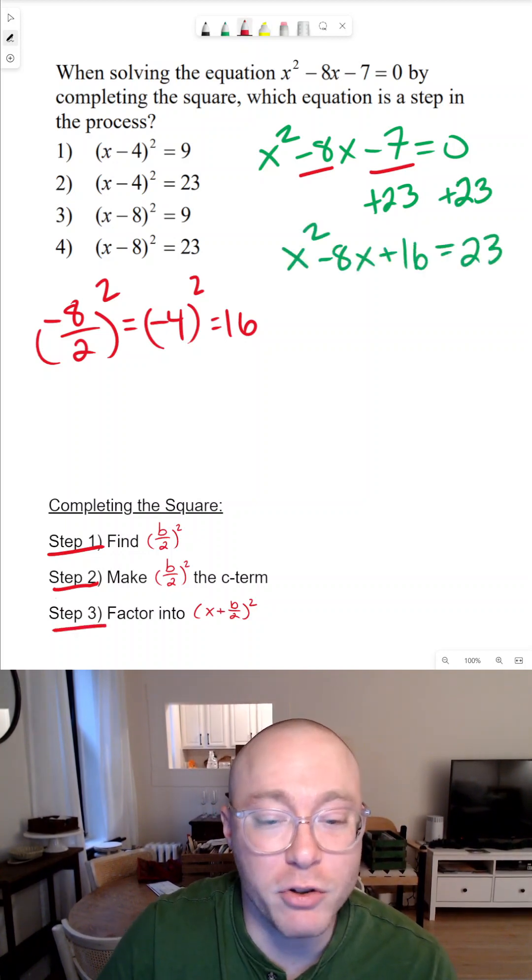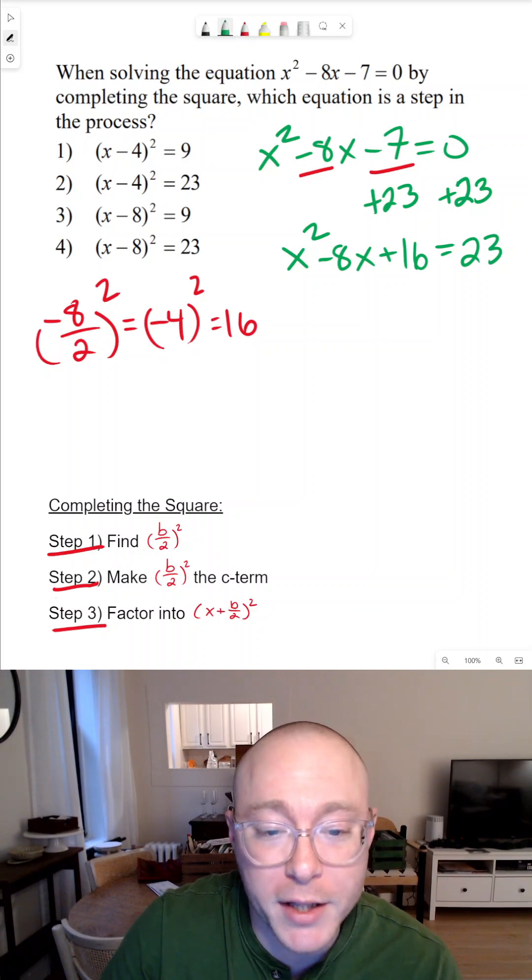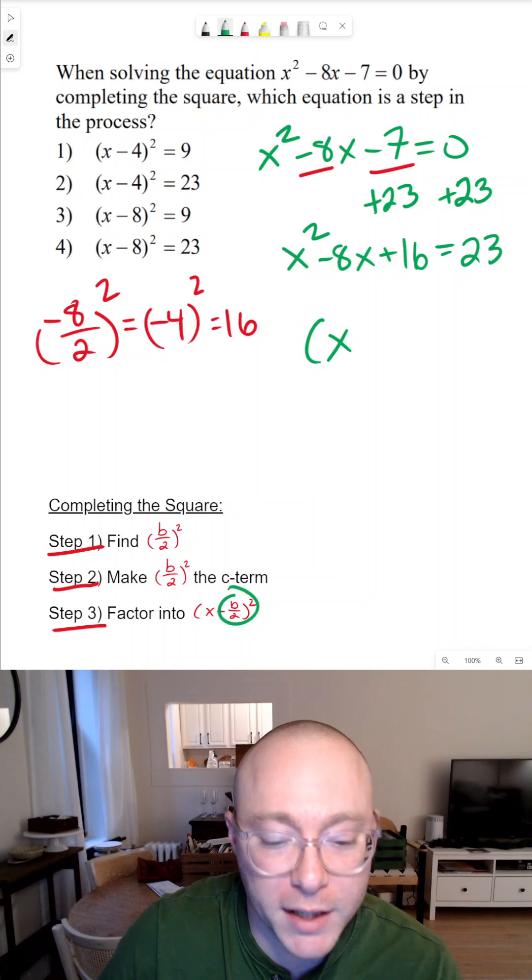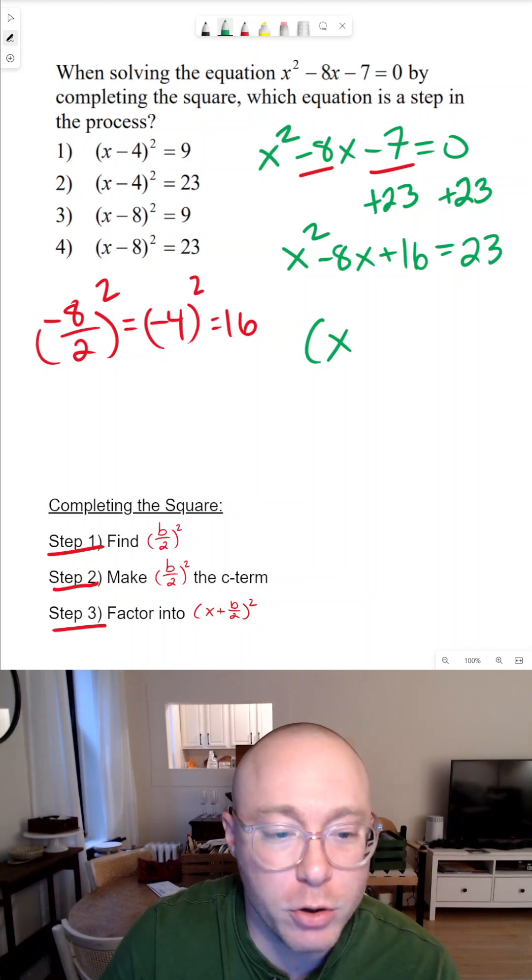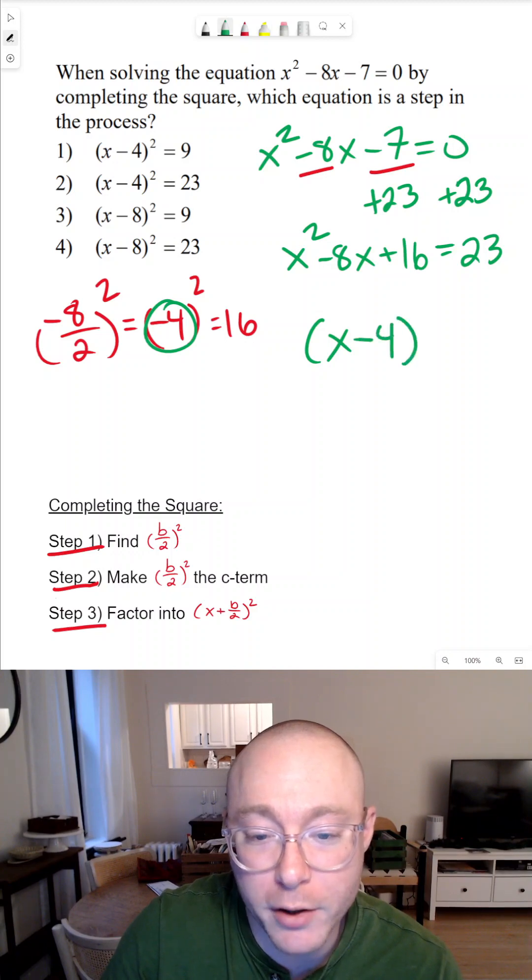The final step is to factor this quadratic into a binomial squared. That binomial should be made up of x with the number b divided by two. And b divided by two, if we look back, that was negative four. So we now want to write x minus four squared equals 23.